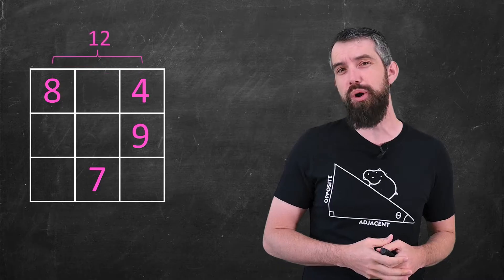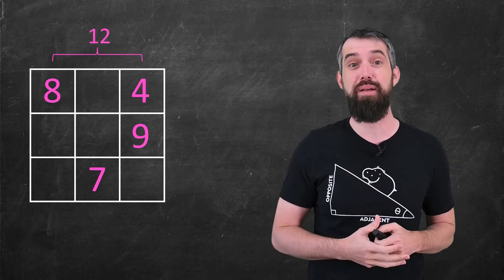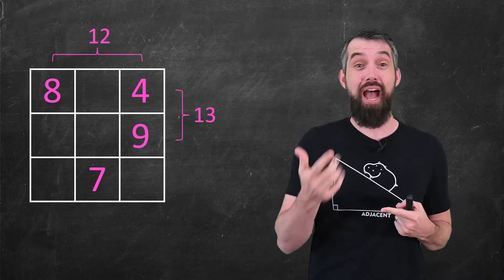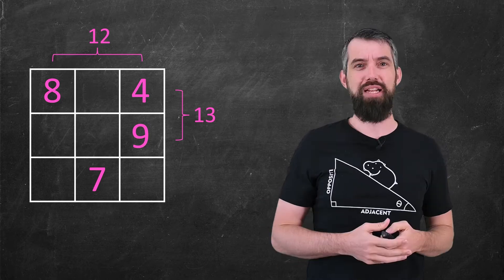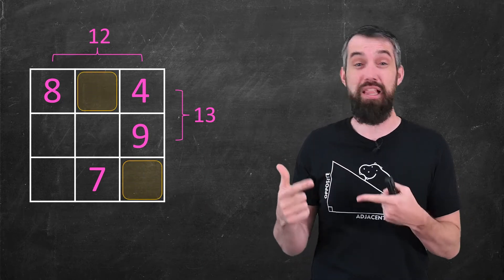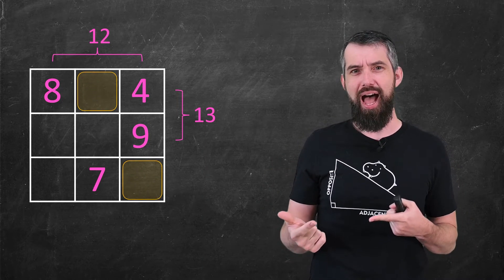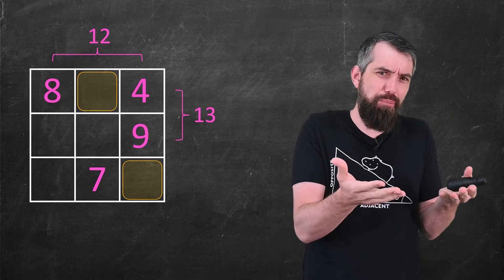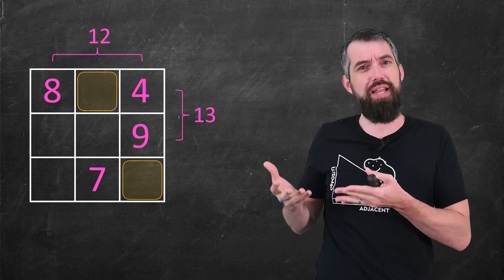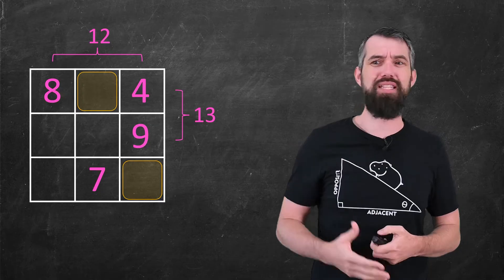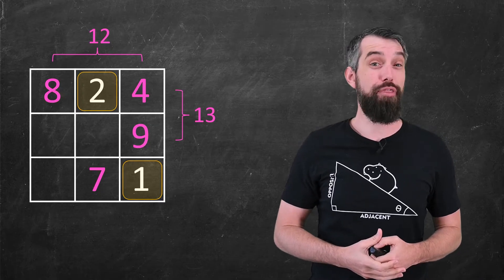For example, when I was doing this, I noticed that the top row had an 8 and 4, which added up to 12, and that the right column had a 4 and a 9 that added up to 13. And so, when it came to filling in the two remaining pieces, I knew that the one in the top row had to be one bigger than the one in the right column. So, like, something like 2 and 1 would work, or 3 and 2.